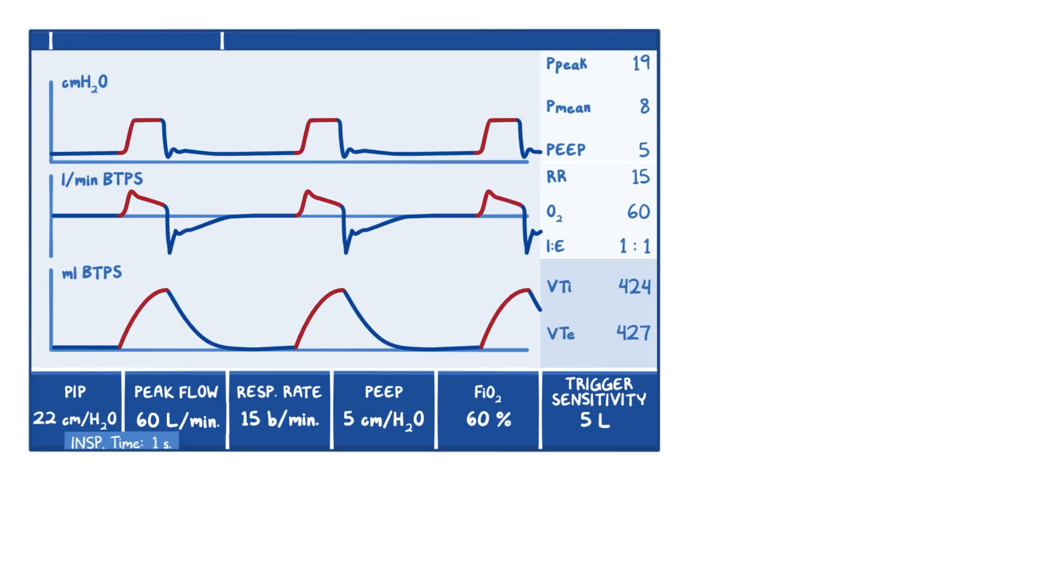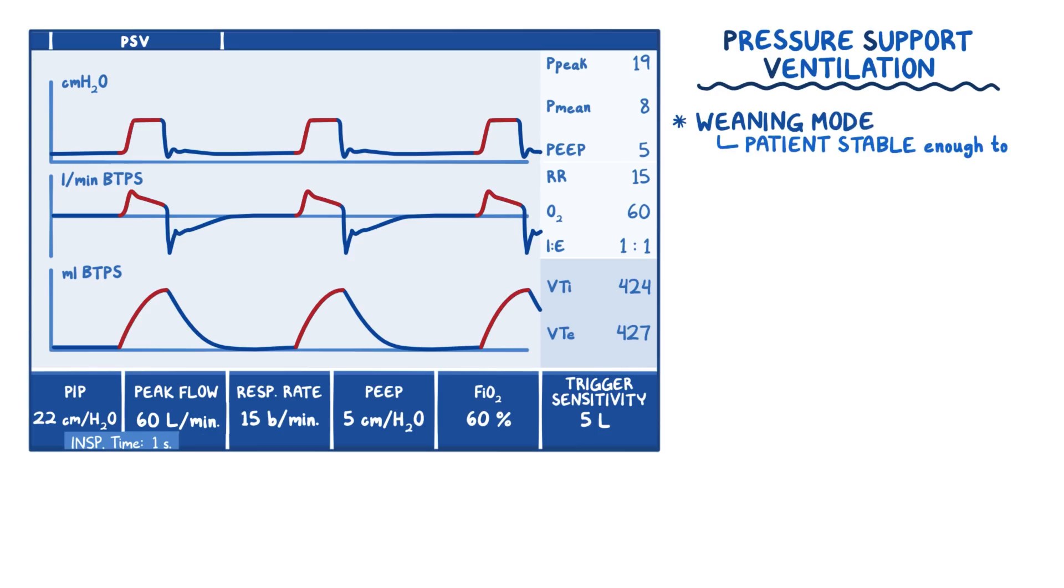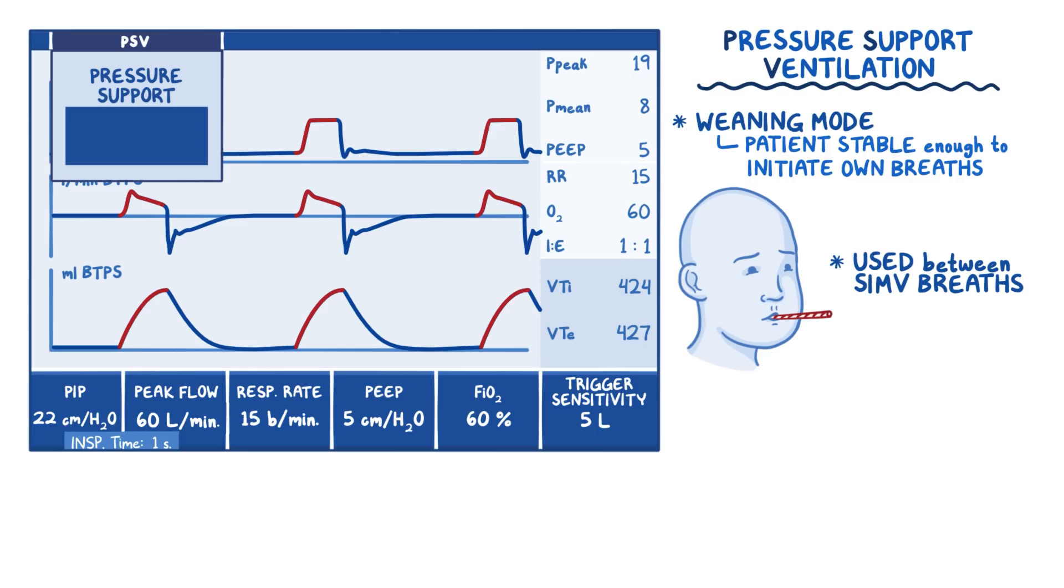The last pressure mode of conventional ventilation is called pressure support ventilation, and is often considered a weaning mode because it needs our patient to be stable enough to initiate their own breaths. But because breathing through an endotracheal tube has a resistance that feels like breathing through a straw, it is also often a mode used between SIMV breaths to help offset the increased work of breathing needed with spontaneous breaths. In this setting, the pressure support is adjusted to create appropriate minute ventilation and tidal volume. To achieve these parameters, pressure support is generally set between 10 to 14 centimeters of H2O, so we'll set ours at 10 centimeters of H2O.